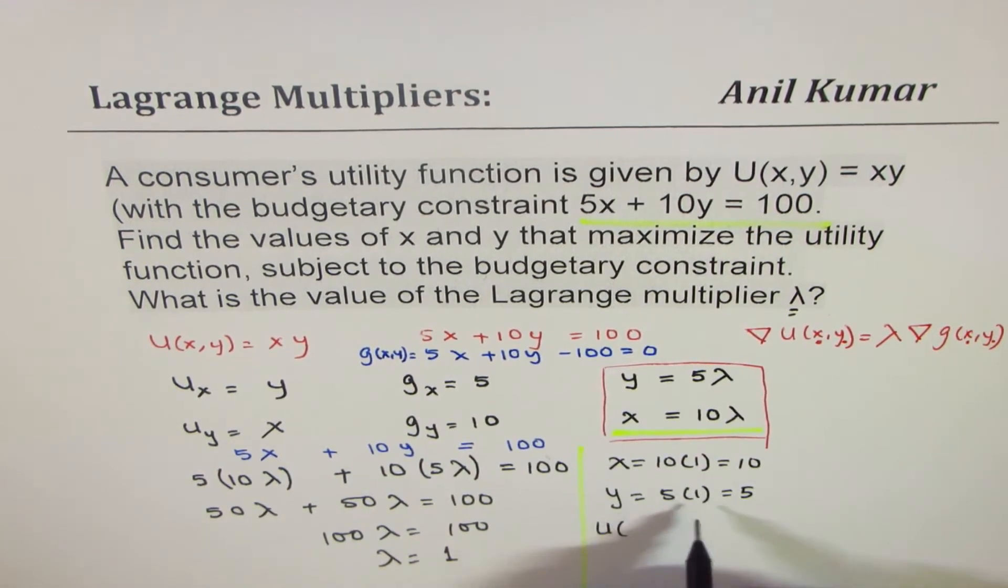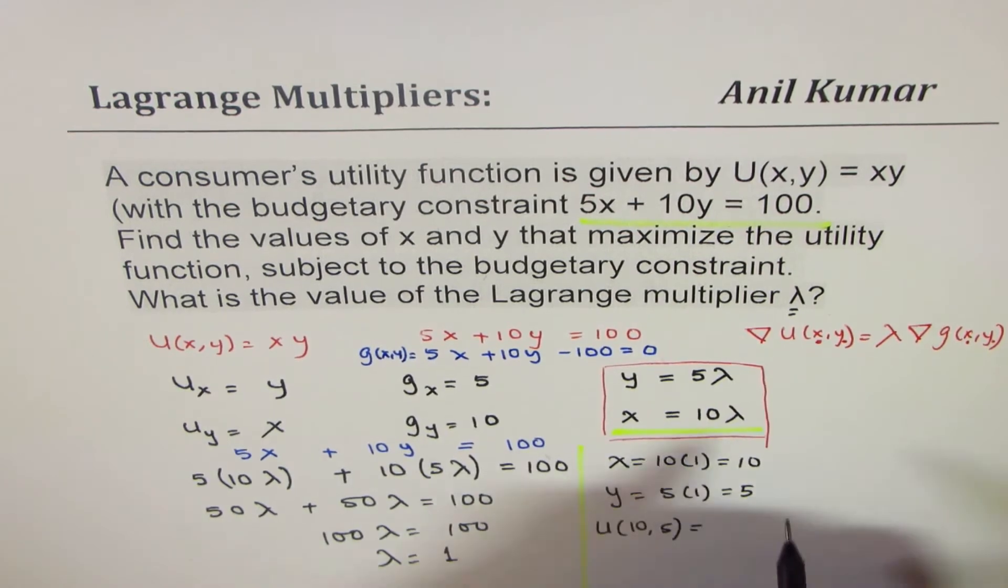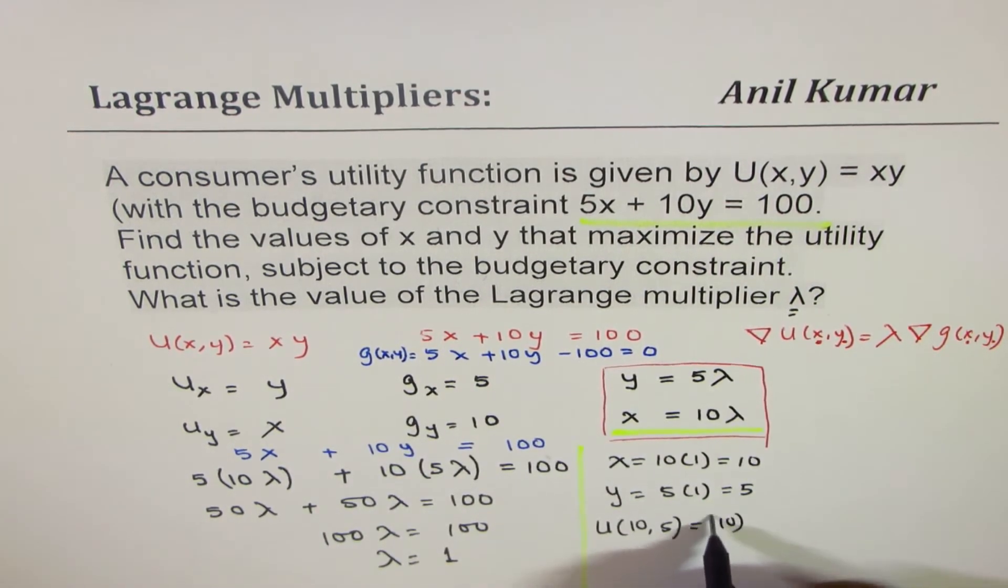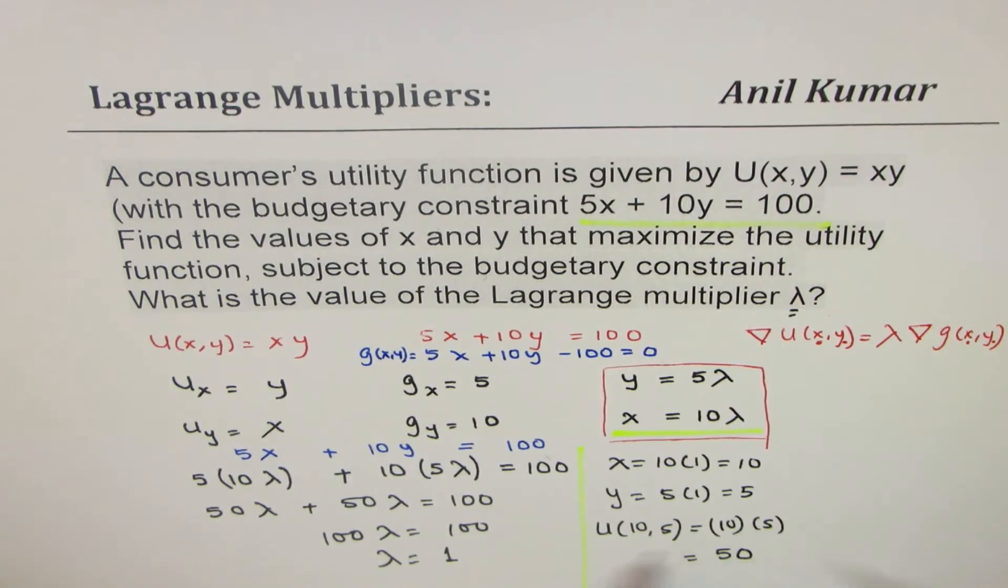So that's what we get in the maximum utility, U(x,y), so x value is 10, y value is 5, is equal to x times y, so which is 10 times 5, the value is 50. So we get 50 units as the maximum utility function value.